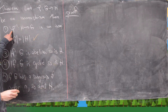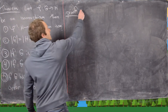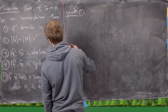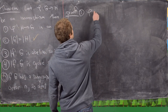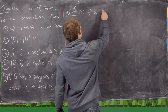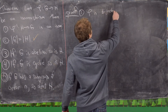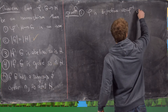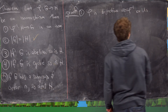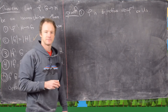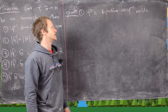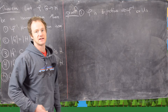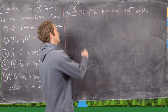To prove part one, we know that phi inverse exists because phi is bijective. So phi is bijective, and that tells us that phi inverse exists and is also bijective.